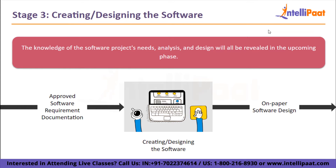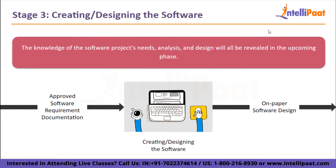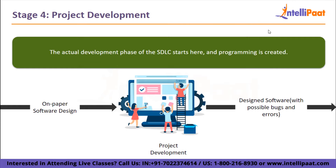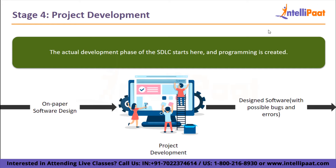Stage 3 is creating or designing the software. The knowledge of the software project needs, analysis, and design will all be revealed in this phase. This phase is the result of the previous two — requirement analysis and client input. Stage 4 is project development. The actual development phase of the SDLC starts here and programming is created. Coding represents the start of design implementation. Programming tools including compilers, interpreters, debuggers, and similar tools are used, and developers must adhere to the coding standards outlined by their management.